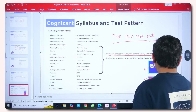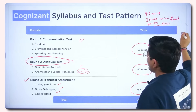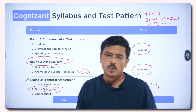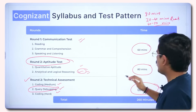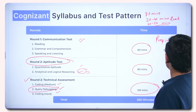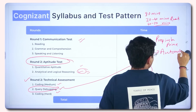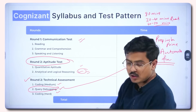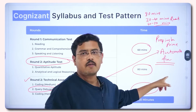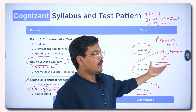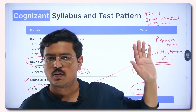There is one more section called query debugging. In this, you generally have a question in which there is some error and you have to fix it. For this, you go to PrepInsta Prime and find the Automata Fix course. You can also find example questions on the Cognizant page at PrepInsta.com in the prepare section. The approach and methods for solving them are available in the Automata Fix course on Prime. You can enroll in any course on PrepInstaPrime.com and get complete access to over 200 courses.